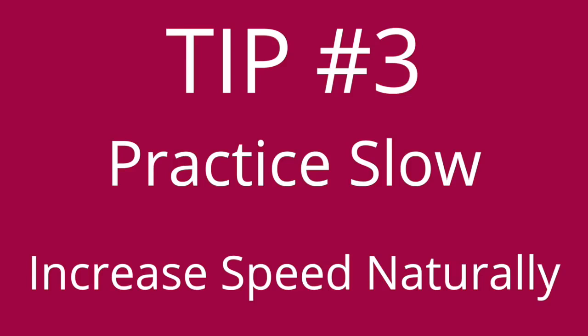Tip three: practice slow and increase speed naturally. Let's take the sentence we were using before. When you're practicing this, start slow. The way I said it — 'but I bought a' — that's probably too fast for you right now, and that's okay. You can practice with 'but I,' then 'but I bought a.' Practice slow. Say it maybe five or ten times, as much as you need to feel comfortable with the sound. And once you're comfortable, speed it up just a little bit.